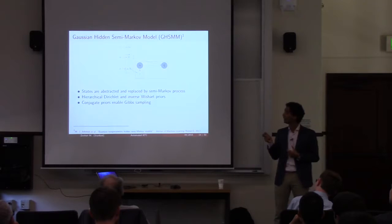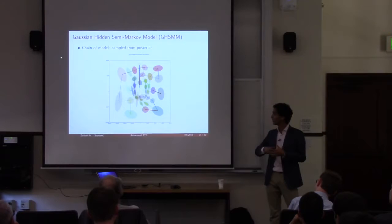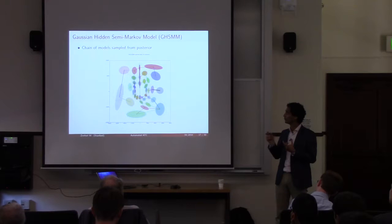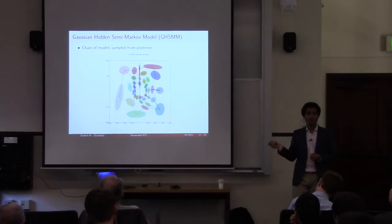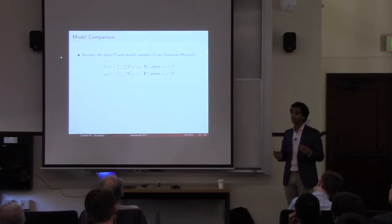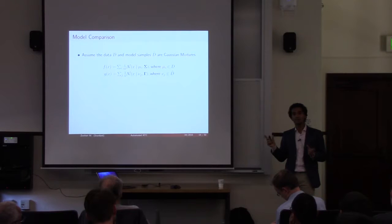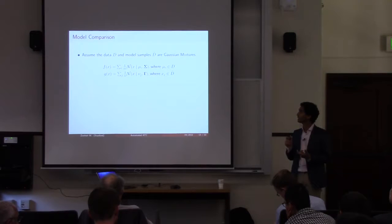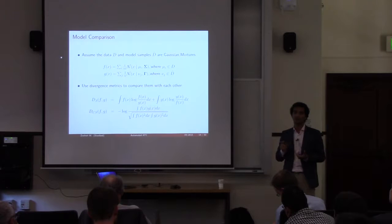The beauty of this is that you can use conjugate priors and more effective sampling methods, making inference more tractable. When you run these MCMC chains, you get draws from the posterior of the parameters. You can see the navigation goals as the chain converges — the locations don't change as much, but the probabilities themselves change. To get a more quantitative measure, we assumed both observed data and model-generated data are Gaussian mixtures, and computed divergences between them — specifically the symmetrized KL divergence and the Cauchy-Schwarz divergence.